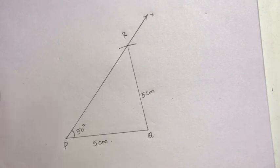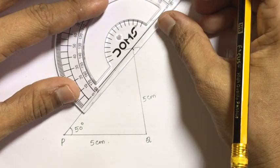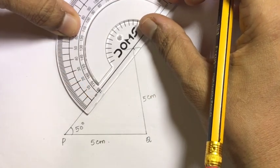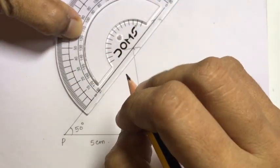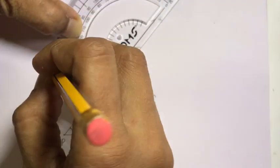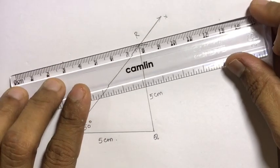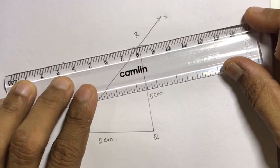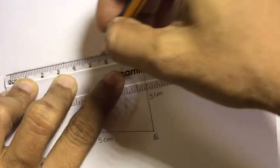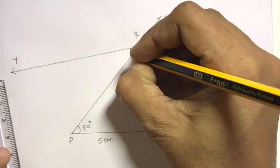Next, angle PRS equal to 40 degrees. Place the protractor center on R and coincide with line PR. Mark 40 degrees - that is an acute angle, less than 90 degrees. So on this side, mark 40 degrees. This angle is 40 degrees.